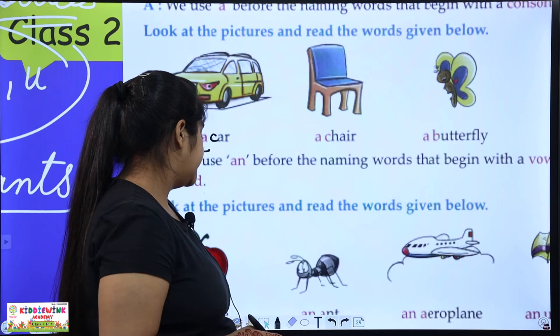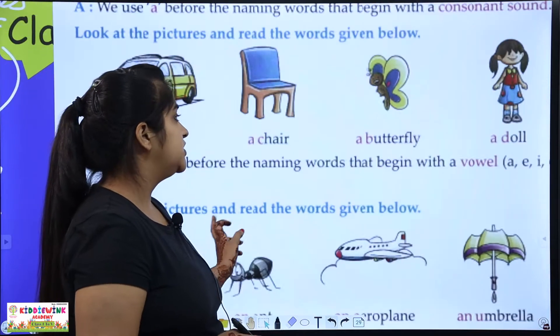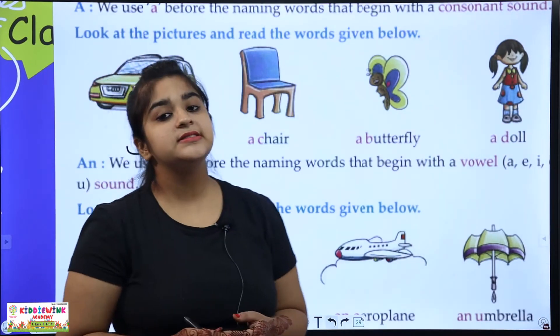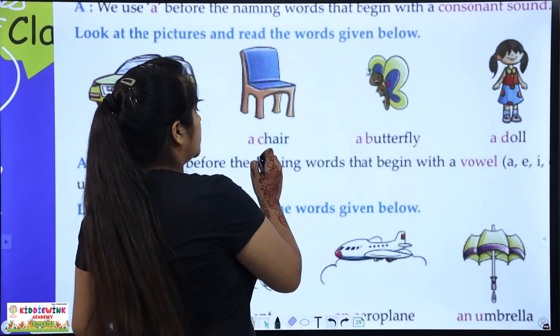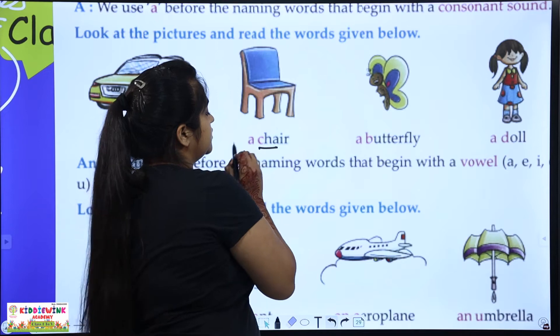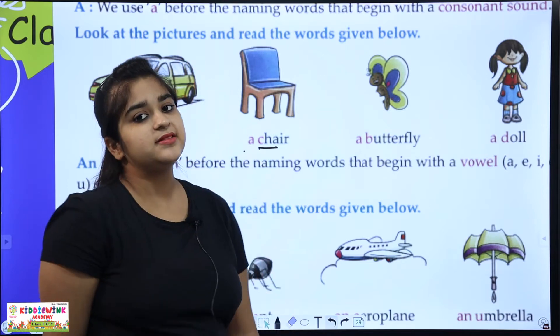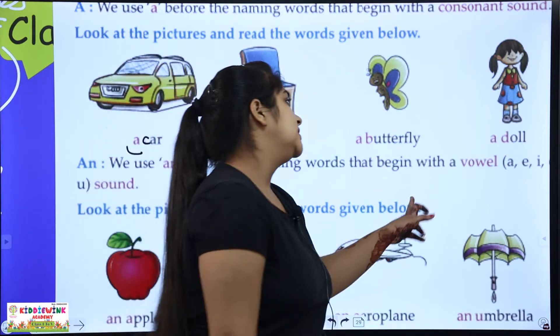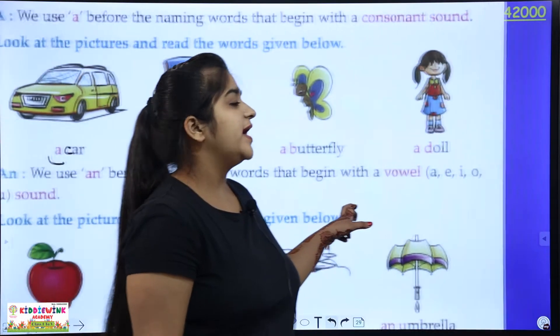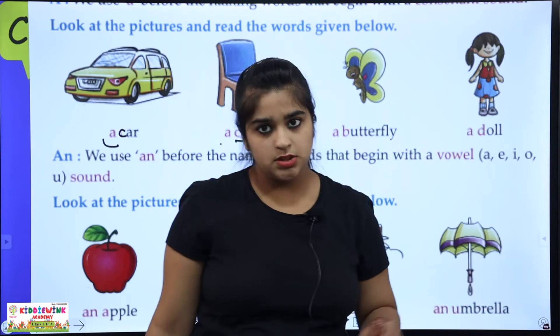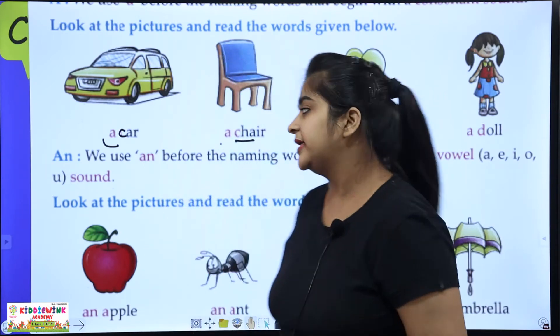For example: chair — it starts from C, which is a consonant, so we say 'a chair.' More examples: a butterfly, a doll. Clear?